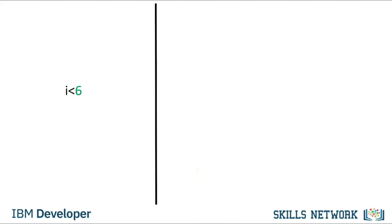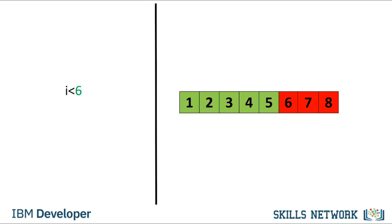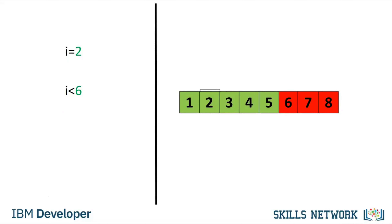We can change the inequality: if the value of i is less than the value 6, the condition becomes true. The areas where the inequality is true are marked in green, and red where false. If the value for i is set to 2, the result is true as 2 is less than 6. The inequality test uses an exclamation mark preceding the equal sign — if two operands are not equal, the condition becomes true. If we set i equal to 2, the operator is true as 2 is not equal to 6.